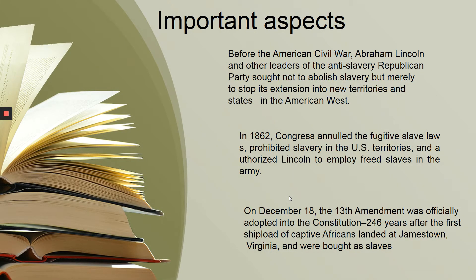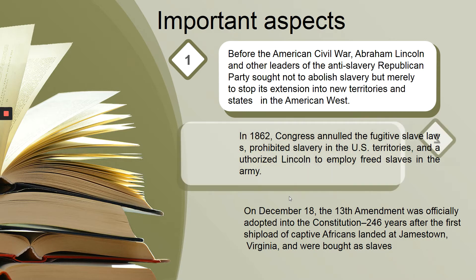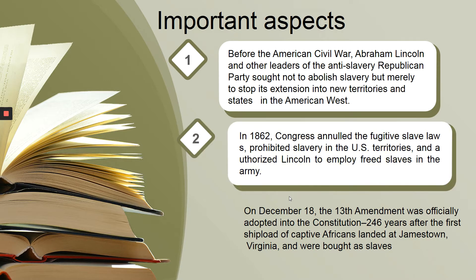Here we have some important aspects. The first one: before the American Civil War, Abraham Lincoln and other leaders of the anti-slavery Republican Party sought not to abolish slavery, but merely to stop its expansion into new territories and states in the US. The second one: in 1862, Congress annulled the fugitive slave laws, prohibited slavery in US territories, and authorized Lincoln to employ freed slaves in the army.